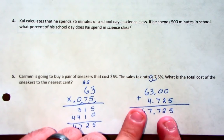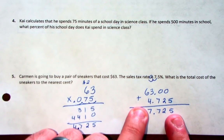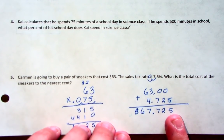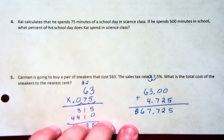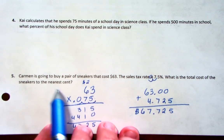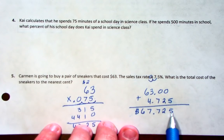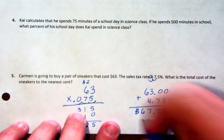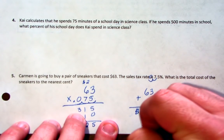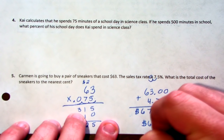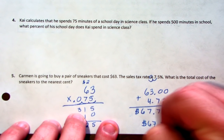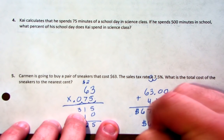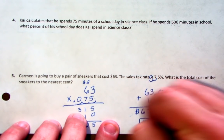I've never seen a cash register show $67.725, so we need to round to the nearest cent as the instructions say. The 5 in the thousandths place rounds the 2 up to a 3. So your final answer is $67.73 — that is how much these sneakers are going to cost.